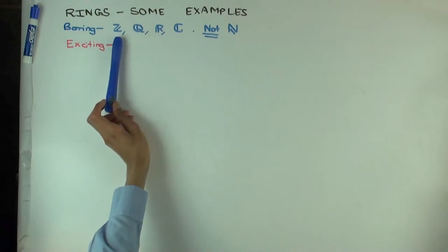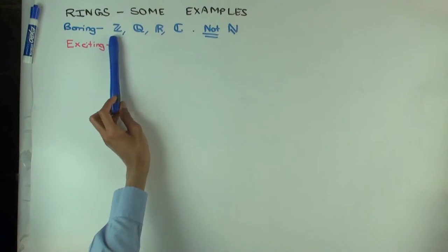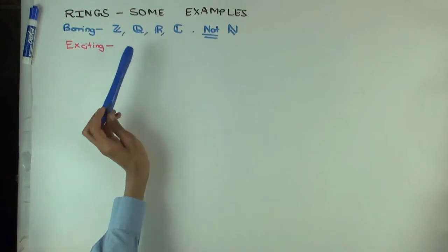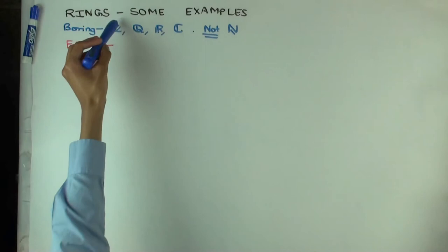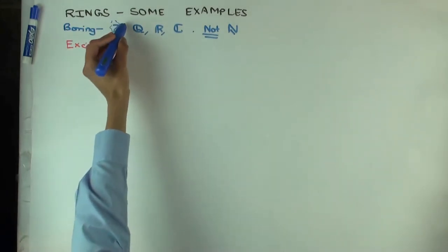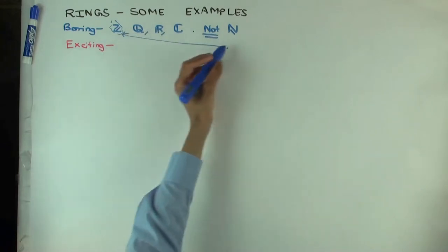So we have the integers. The integers form a ring. Addition you can invert. Multiplication you can do — you cannot invert multiplication, but you can still do multiplication. Now the integers are not just a ring, they are an integral domain.